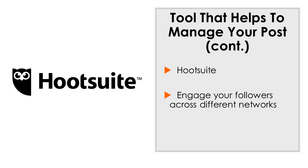The best time to post on Instagram is between 12 p.m. to 1 p.m. Monday through Friday, according to Hootsuite Analytics. Though there are no hard and fast rules on the best time to post, it's recommended that you test it out and track your audience's responses.